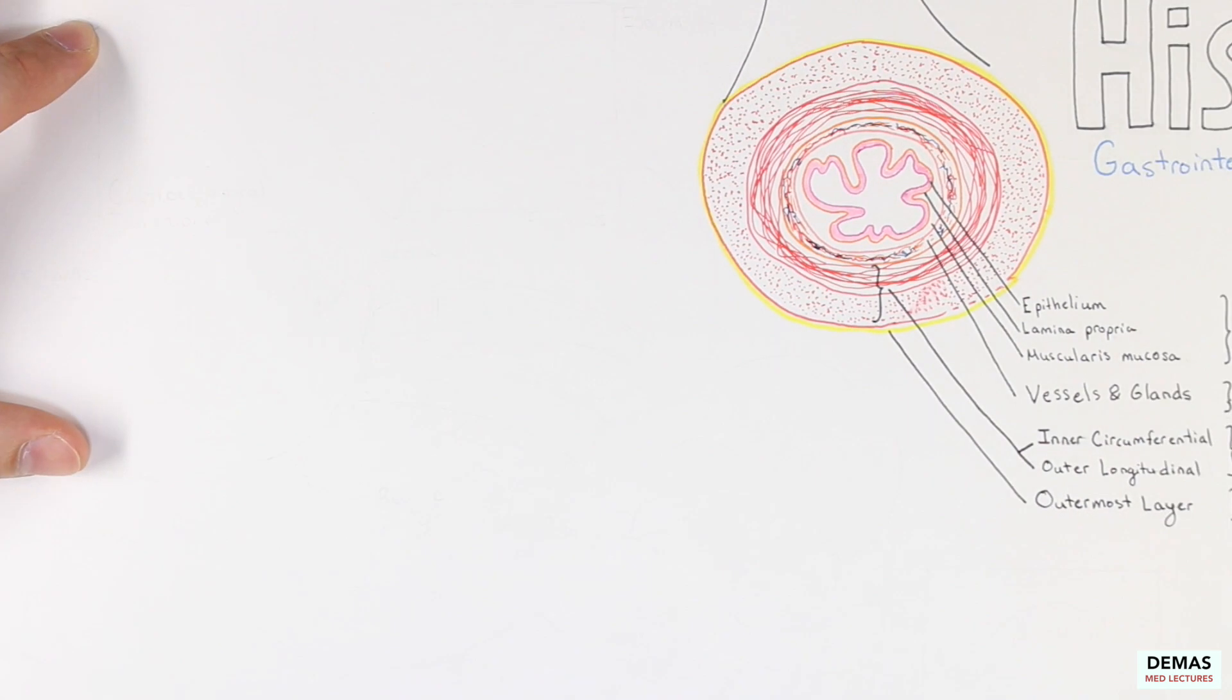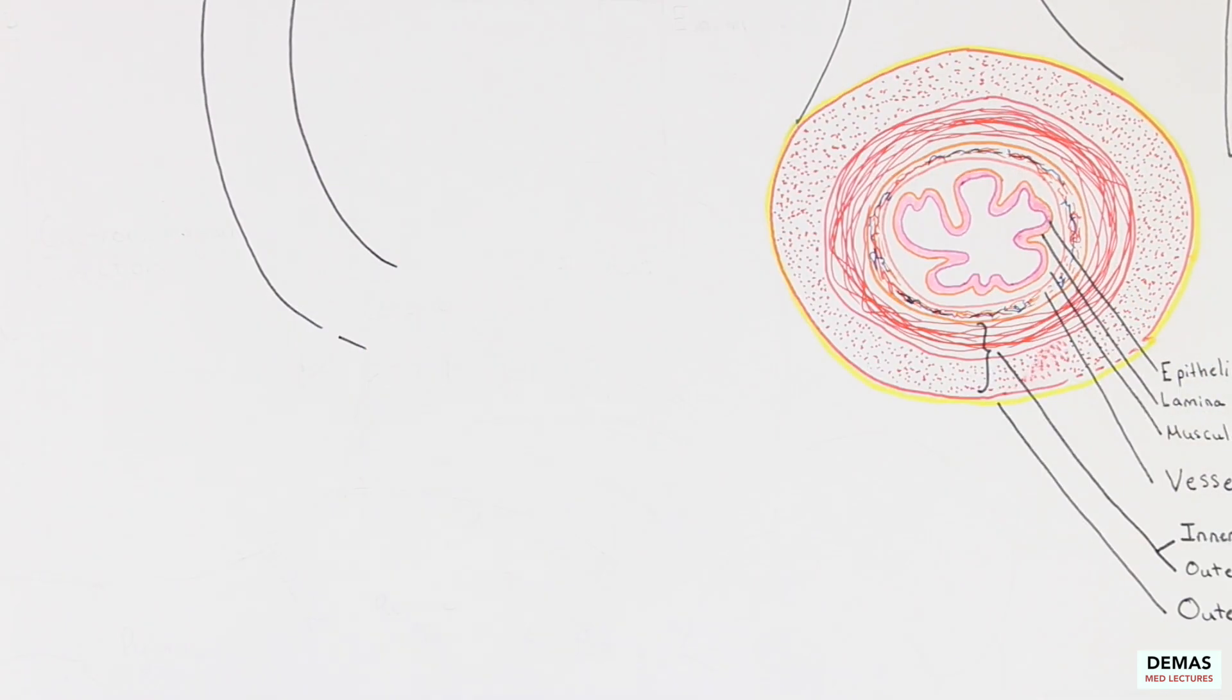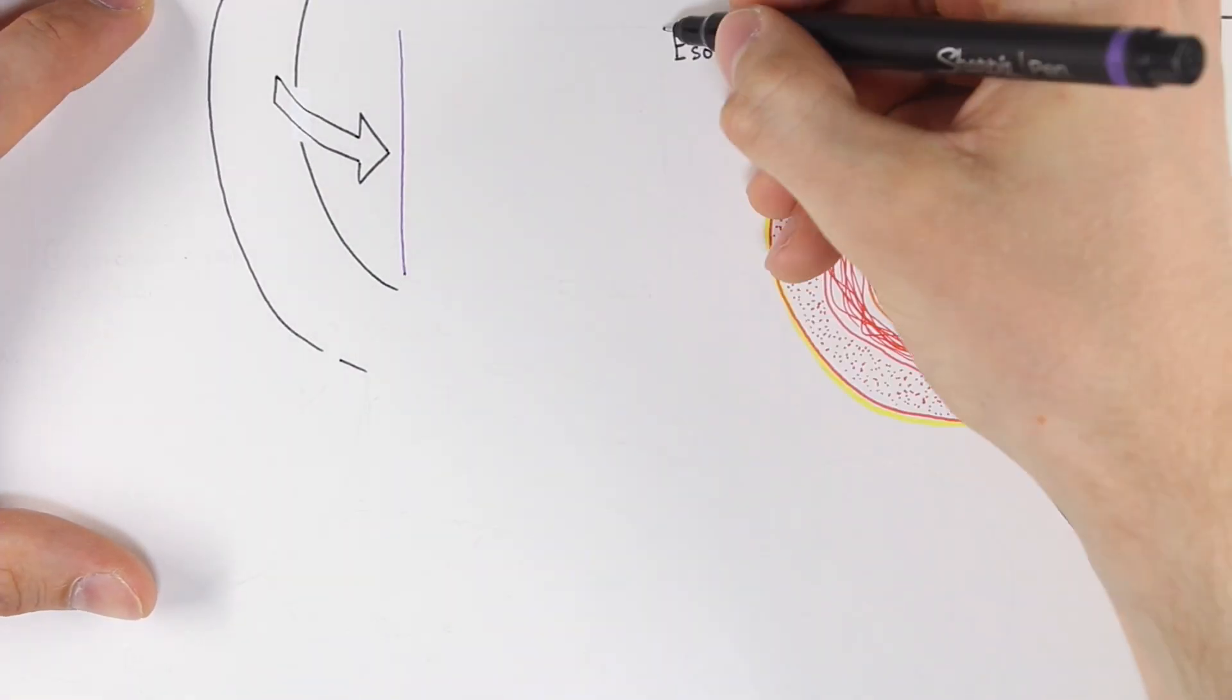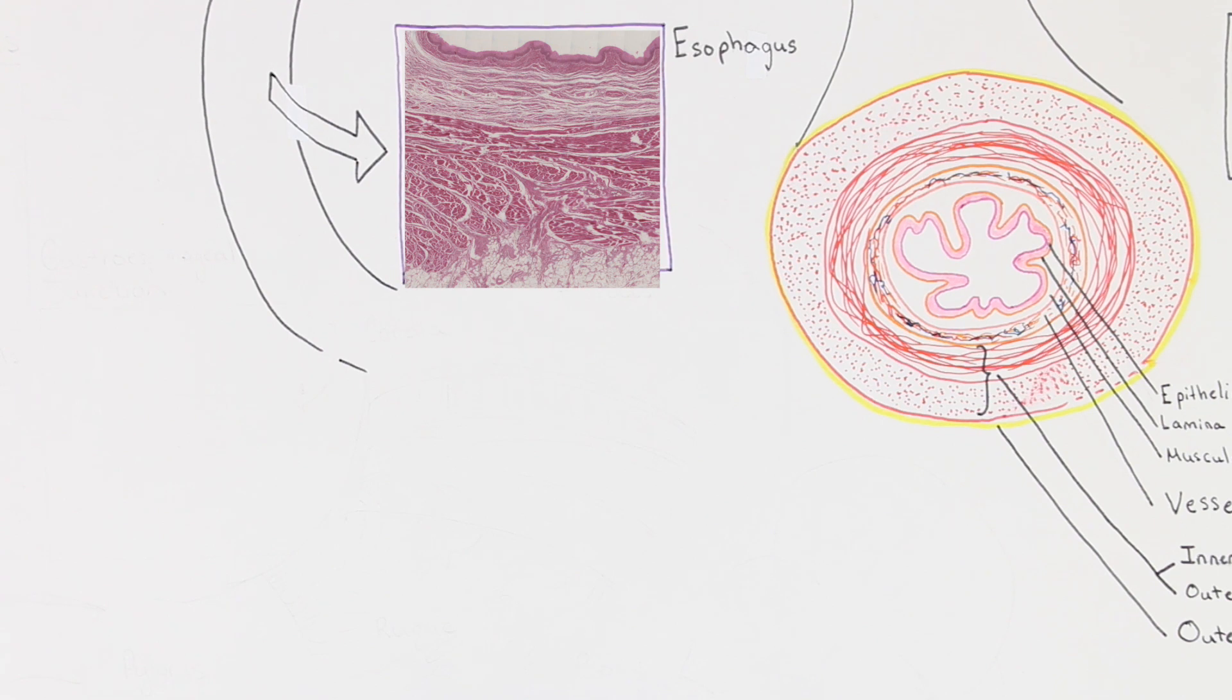Now that we have reviewed the general construct of the gastrointestinal tract, let's begin by looking more closely at the esophagus. I'm going to now insert a picture of the esophagus. Go ahead and pause the video and see if you can identify the layers just described, and then I will reveal the labels.